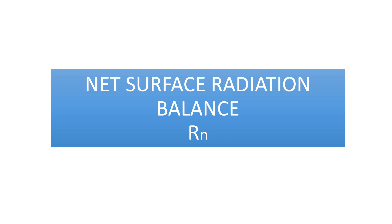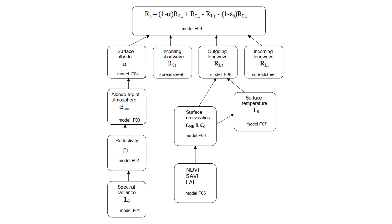Net surface radiation balance. We will use the framework from the SEBAL manual. This is the general formula for net radiation flux, model F09: it is 1 minus surface albedo, multiplied by incident shortwave, plus incident longwave, minus emitted longwave radiation from Earth's surface, plus incident longwave multiplied by 1 minus surface emissivity.